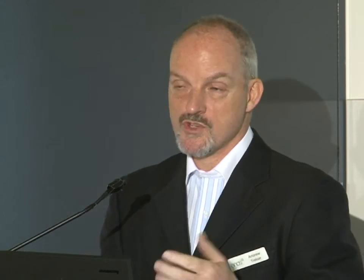The way it's populated — and I'll talk more about this this afternoon when I talk about metadata — is via feeds in a format called OAI-PMH, which Xiaobin Shen will be talking about. The preferred payload is RIF-CS, Repository Interchange Format Collection Schema. We can also do an HTTP GET rather than OAI-PMH — PMH is preferable for reasons that Xiaobin will talk about — and we can also take XML in a variety of formats and transform it, but OAI-PMH with RIF-CS are the preferred mechanisms.